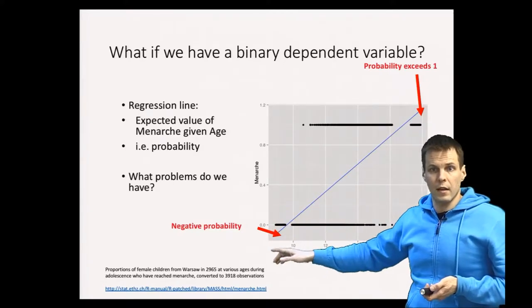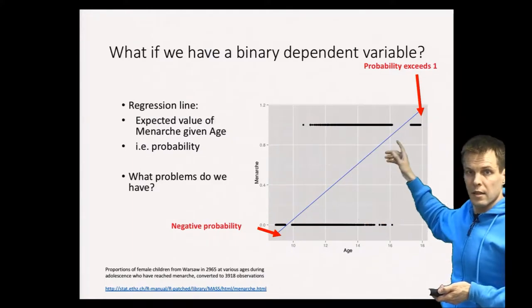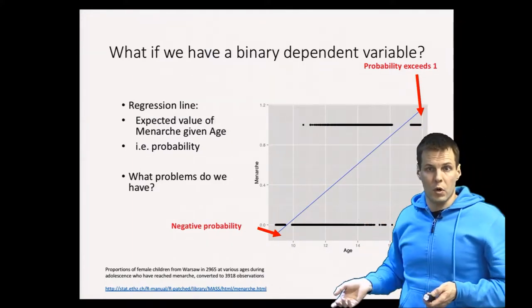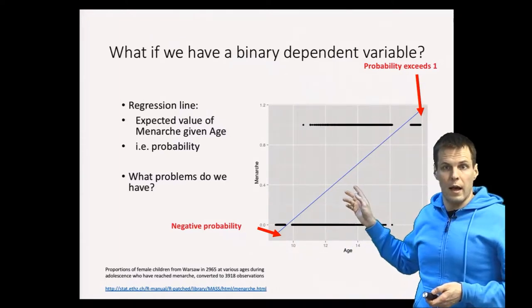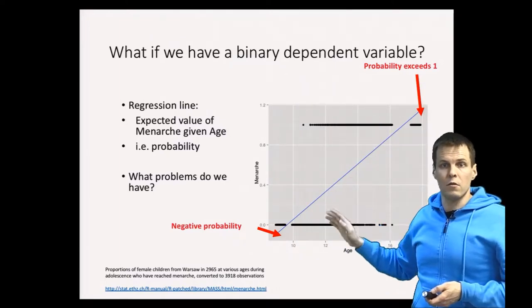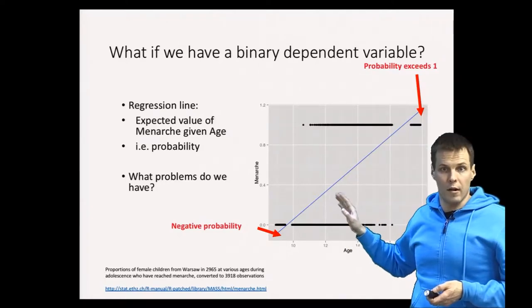But if we have negative predictions or predictions that exceed one within the range of the data, then we have problems. This model is called linear probability model and it can be used, but there are typically better alternatives.